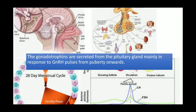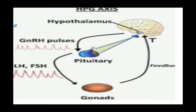Gonadotropins are secreted mainly in response to GnRH pulses from puberty onwards. From puberty onwards, GnRH pulses cause the release of FSH and LH, which in turn regulate the menstrual cycle. We can see that the hypothalamus releases GnRH acting on the pituitary, and after the onset of puberty this GnRH is released in a pulsatile manner — that is why it is called the GnRH pulse.